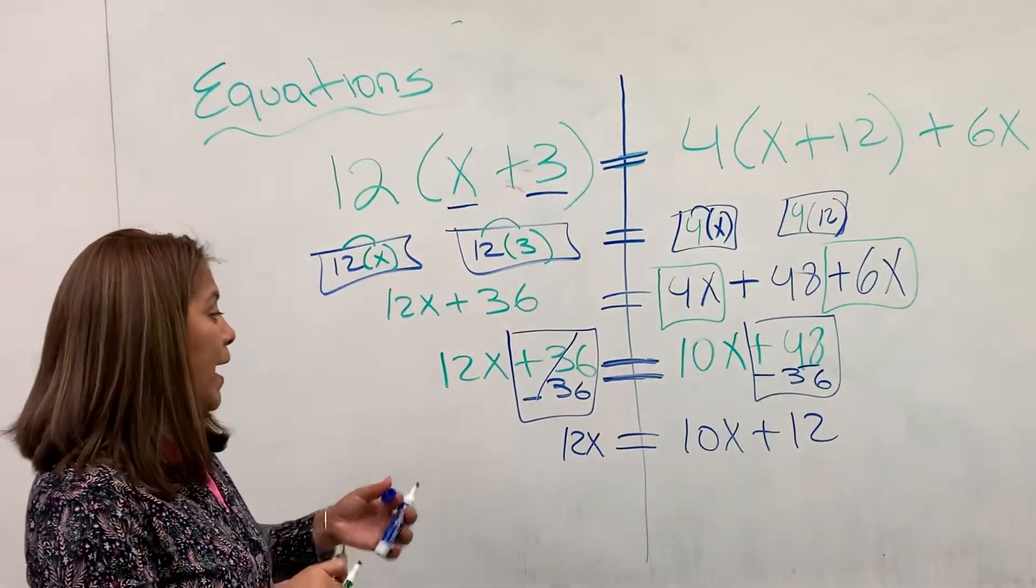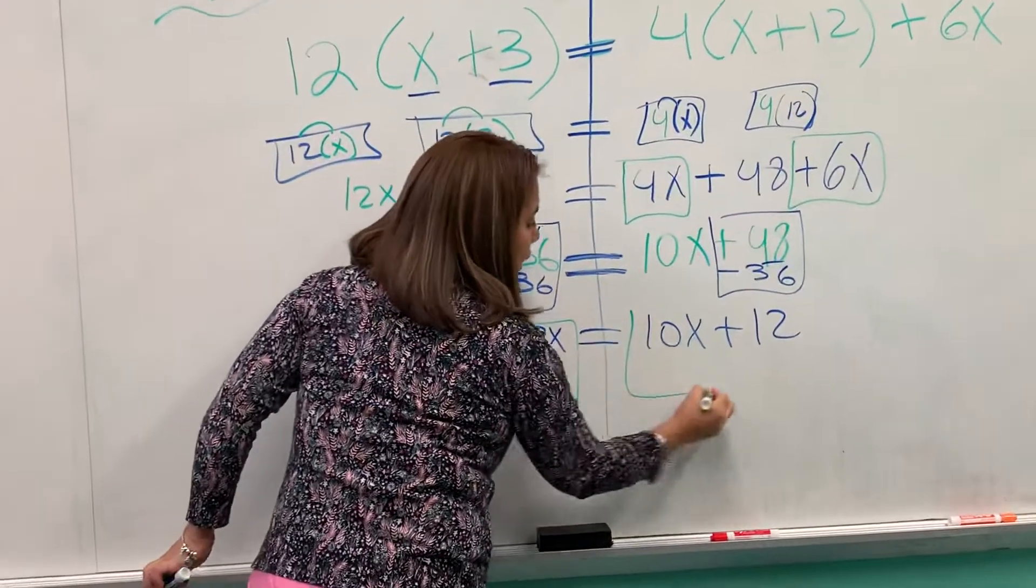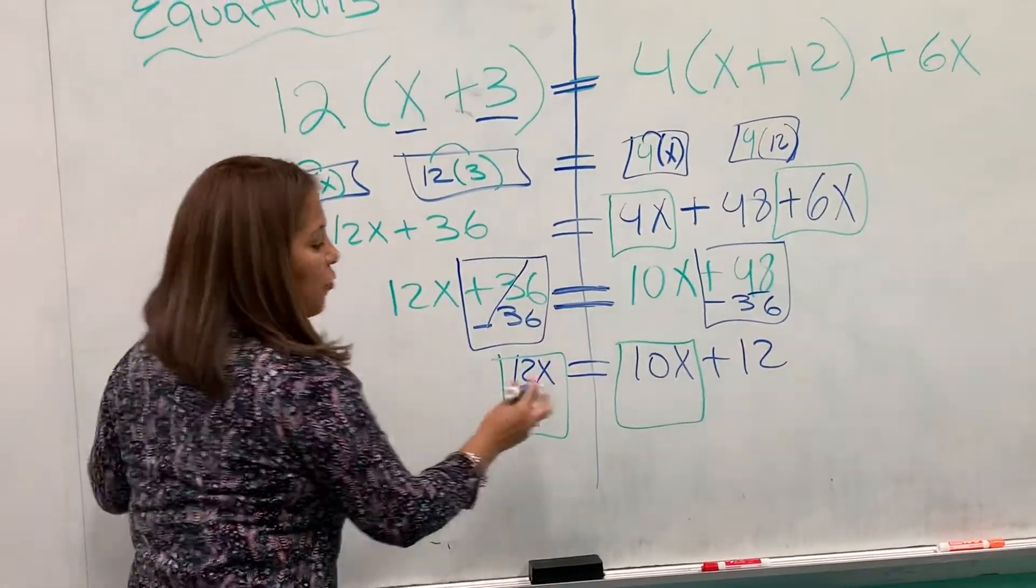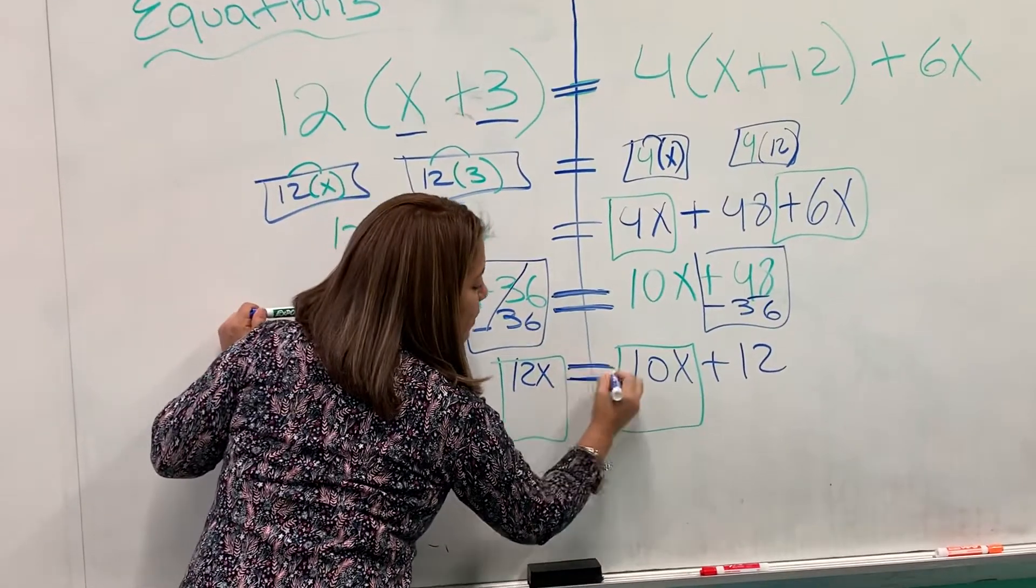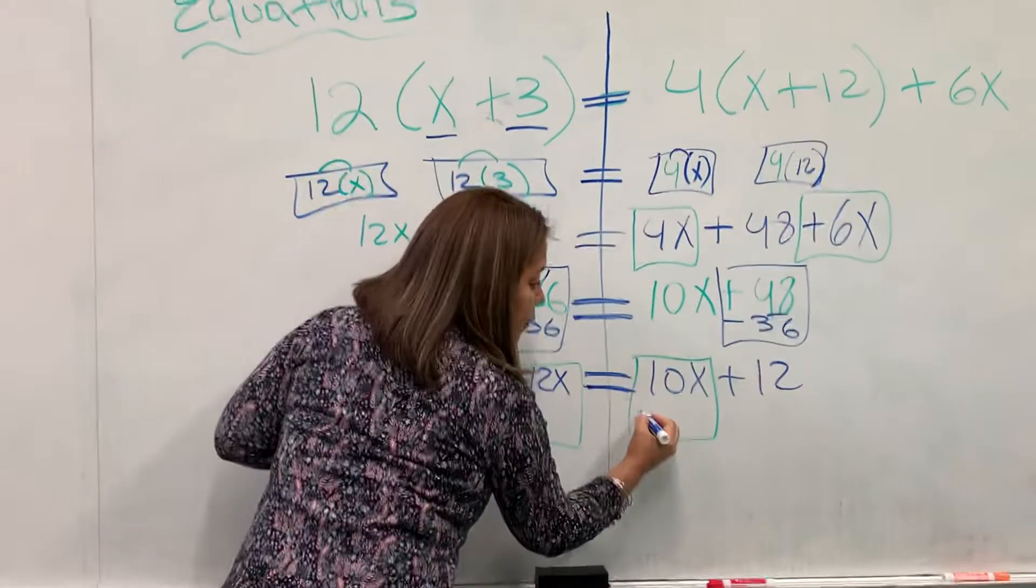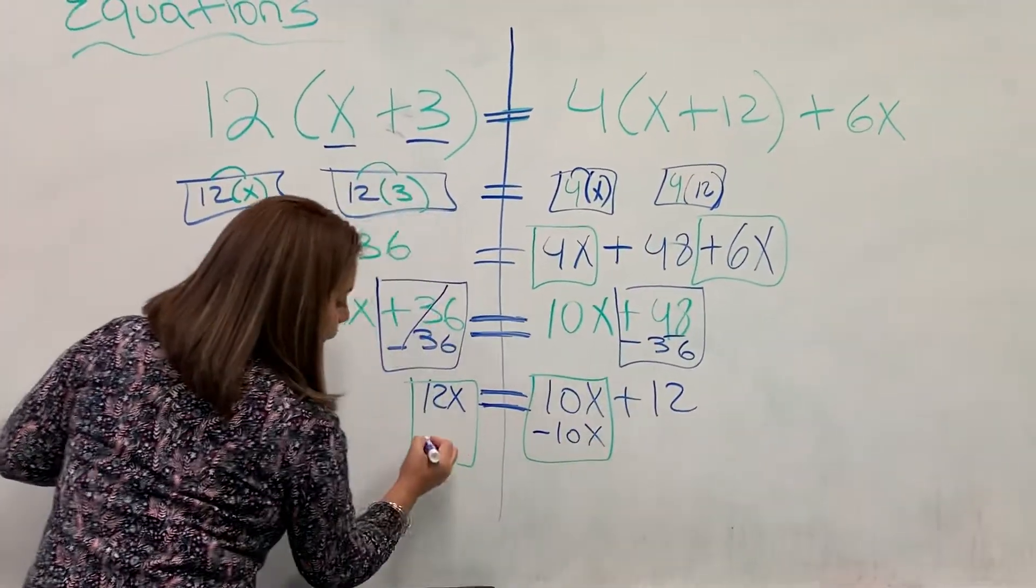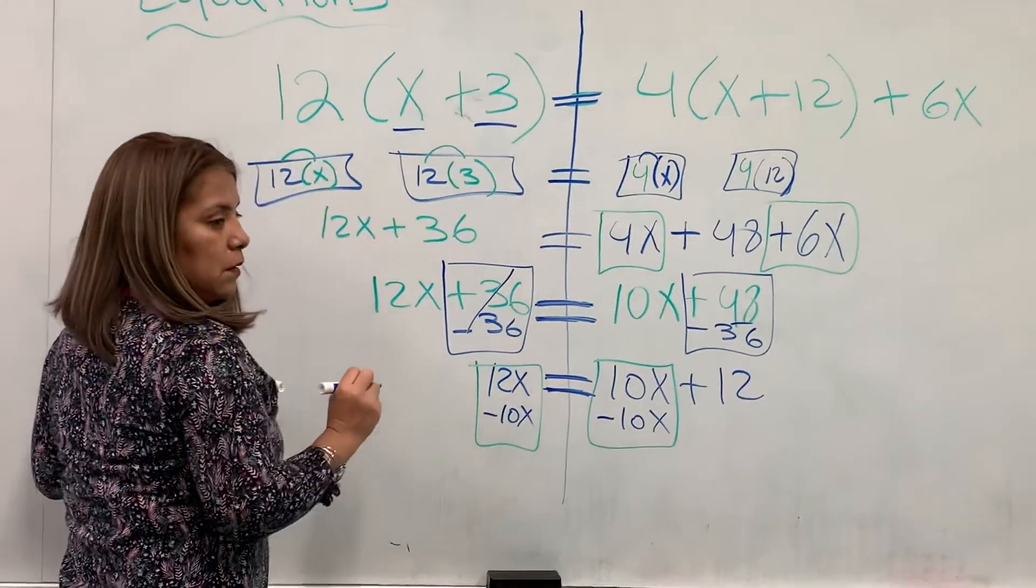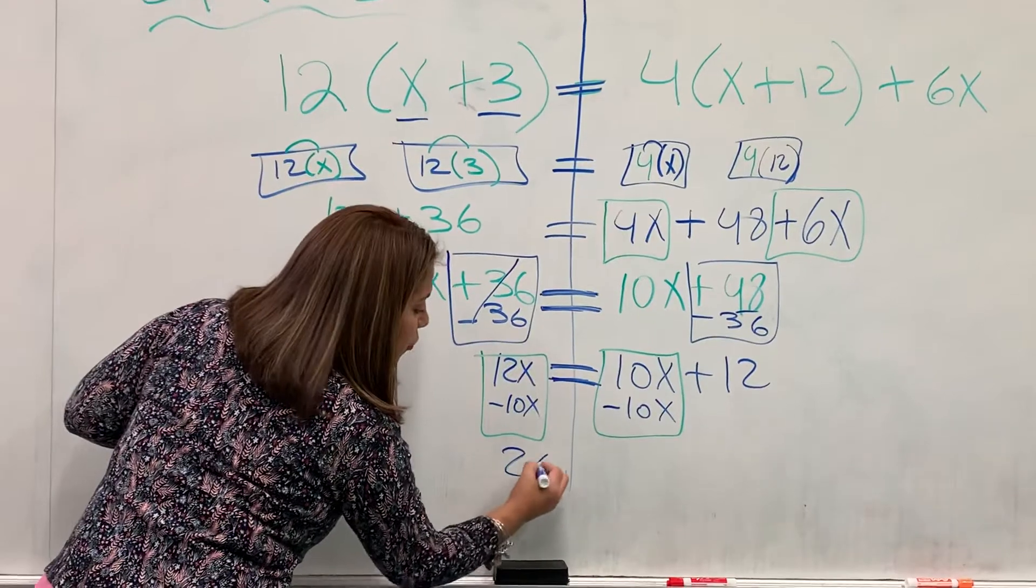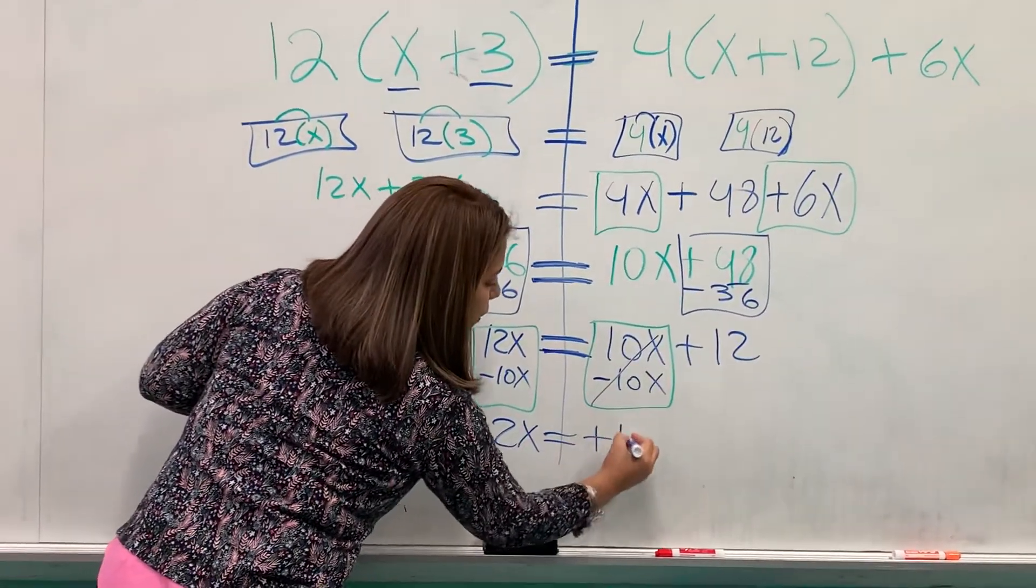Now this time, my like terms are 12x and 10x. And between those two like terms, I have the equal sign that is signaling inverse operation. So I'm going to do my inverse operation. Positive 10x, negative 10x. And negative 10x. I'm going to subtract. This will give me equals to 2x. Goes away. Positive 12.